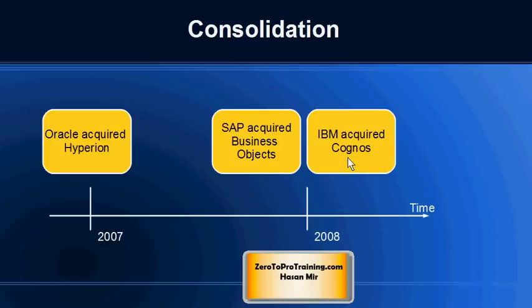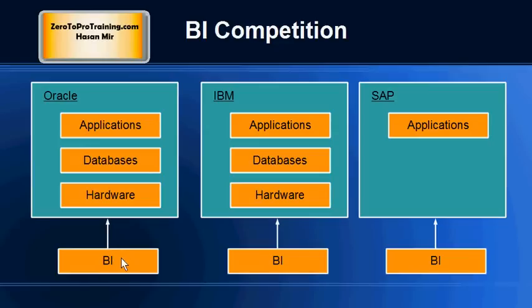So the three market leaders in business intelligence — Hyperion, Business Objects, and Cognos — were acquired by another set of market leaders but in different areas. Oracle was popular in databases, applications, and hardware. SAP was popular in applications, and IBM was ruling the world in databases, hardware, and also somewhat in applications.